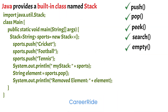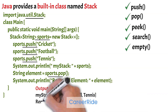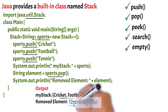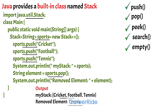Here is an example to create a stack data structure in Java using the Java built-in Stack class. In order to create a stack, we need to import the java.util package first, create an object of the Stack class, and then we can perform push, pop, and peek operations on the stack object. Here we have printed the stack and then removed an item from the stack. The removed item is 'tennis', which was last in.